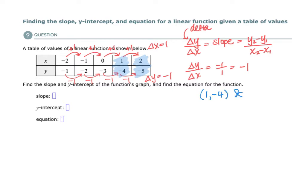So 1, negative 4, and the second coordinate, 2, negative 5. This is our first x-coordinate, and our first y-coordinate, and our second x-coordinate, and second y-coordinate.